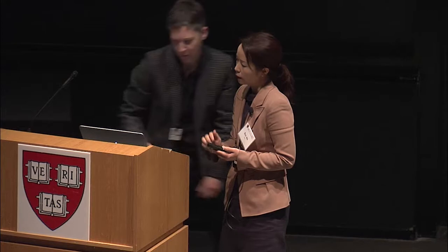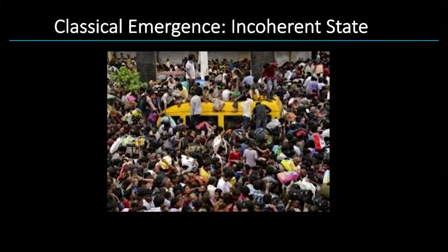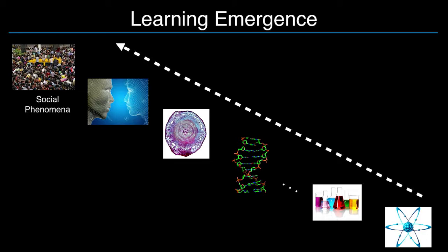This is a very different state, a stampede happening, a very incoherent state. Going down in scale from the example of humans and social phenomena, where my interest lies is going all the way down to the regime of the smallest scale, going from the smallest scale to just a scale up. That is the emergent phenomena involving electrons.